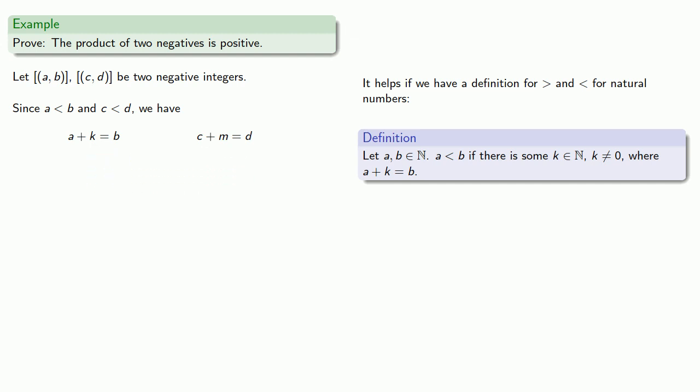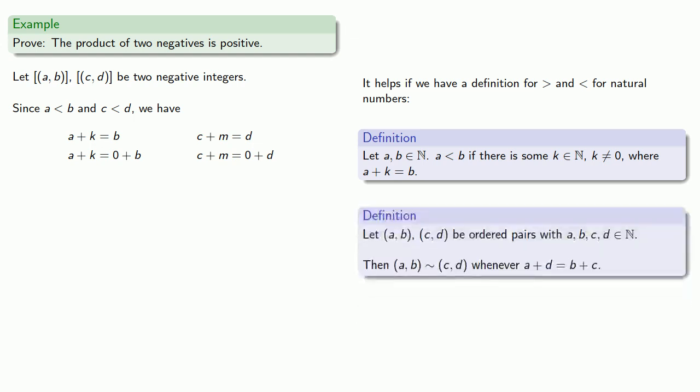And since a, k, b, c, m, and d are all natural numbers, then all of the properties we've proven for the natural numbers still hold. So I can rewrite one side using the additive identity zero. Definitions are the whole of mathematics, all else is commentary. Remember that our definition for our equivalence relation is a plus d equals c plus b, and so I can rewrite both of these statements in terms of our equivalence relation.